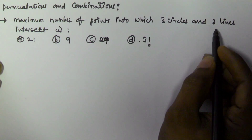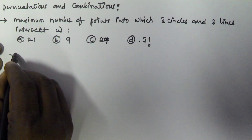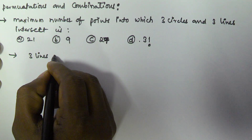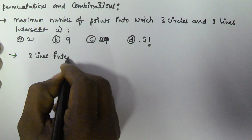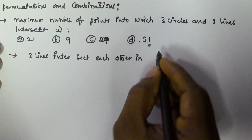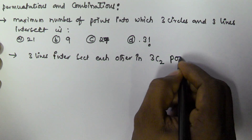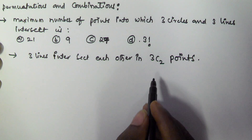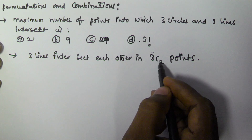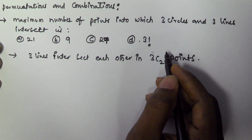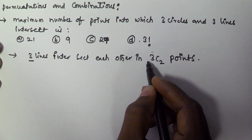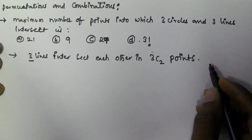First, we take three lines intersecting each other. Three lines intersect each other in 3C2 points. Why? Because there are three lines, and to intersect we need at least two lines. That's why it is going to be 3C2. There are three lines total, and to intersect we need at least two lines, so we get 3C2 points.